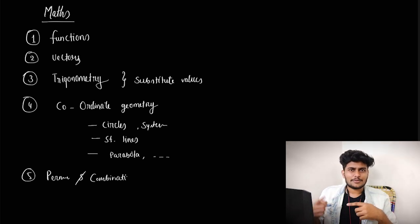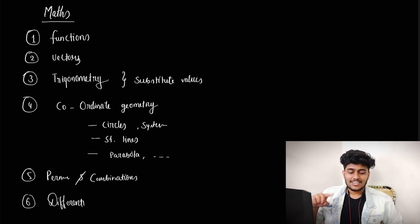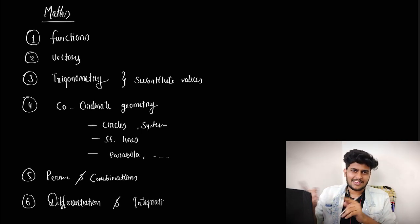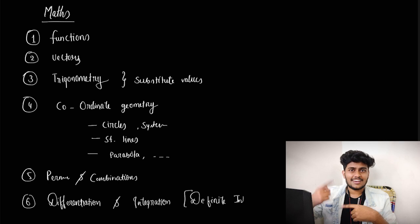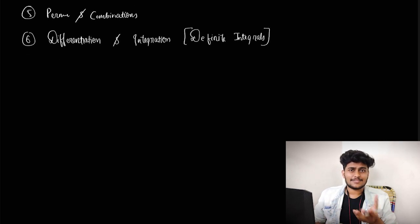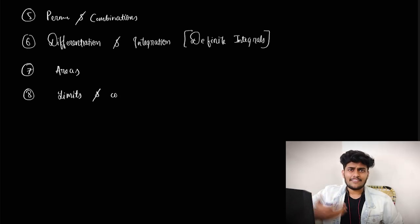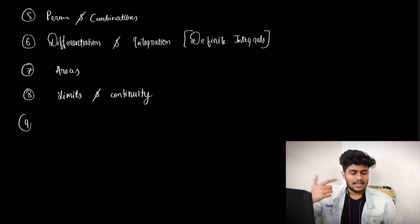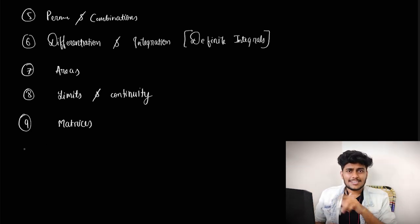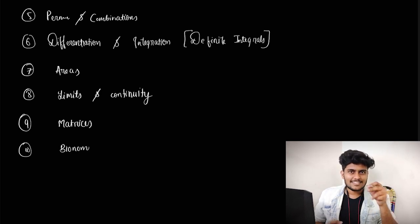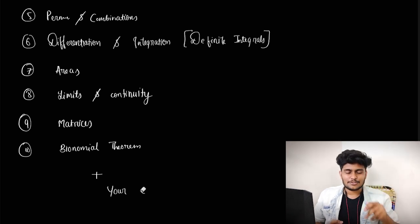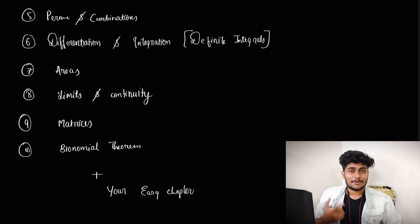You can substitute values from previous years — there are many questions in previous years. For integration, you can cover trigonometry as well. There are definite integrals and indefinite integrals chapters. In areas: limits, area under the graph — every year the models repeat. For limits-based questions, like limit t tends to 0, you can directly substitute 0. So you can choose MZ for these chapters and score well.